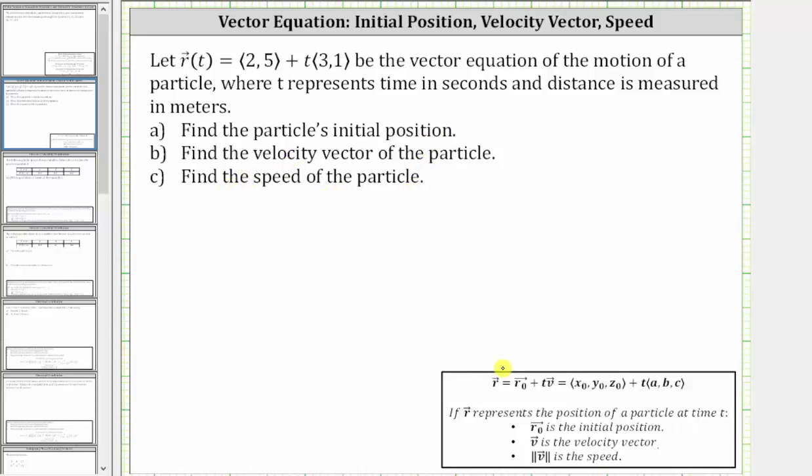When a vector equation is given in this form and it represents the position of a particle at time t, then the vector r sub zero is the initial position, which is also a position vector, and the vector v is the velocity vector, which is also a direction vector, and the magnitude of vector v is the speed.